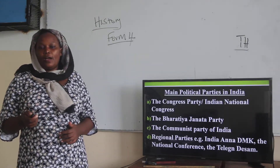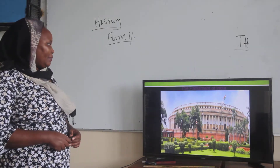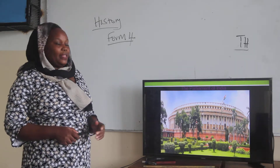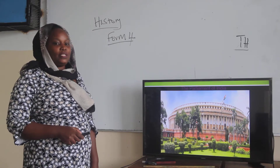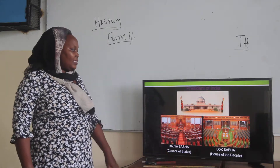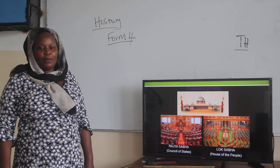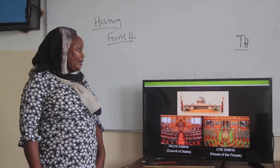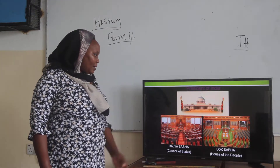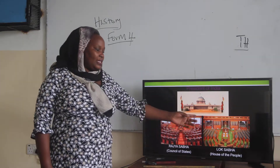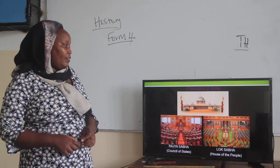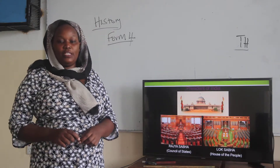Let us look at how their parliament looks. The parliament of India is very beautiful and grand in nature. It has two houses. We have the Rajya Sabha, the upper house or Council of States, and we have the Lok Sabha — the House of the People, or what we would call the National Assembly. The Lok Sabha has many members — almost 545 members.